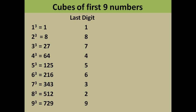One cubed gives last digit 1, two cubed gives last digit 2. Interestingly, two cubed gives last digit 8 and eight cubed gives last digit 2 — they are a special pair. Similarly, three cubed gives last digit 7 and seven cubed gives last digit 3. The rest of the numbers have the same last digit in their cube as the number itself. You must memorize all nine cubes and their last digits.